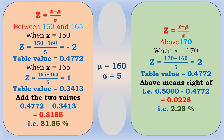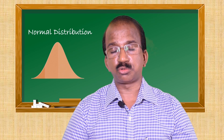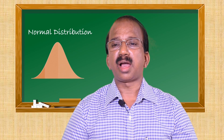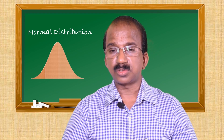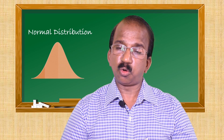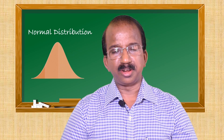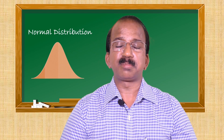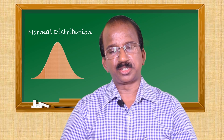Multiplying by 100, we get 2.28%. So the percentage of students at Fatima College with height above 170 centimeters is 2.28%. To know more about normal distribution, correlation, regression, index numbers, binomial distribution, and Bayes' theorem, please visit my blog, Oikonomia Fatima. Thank you.